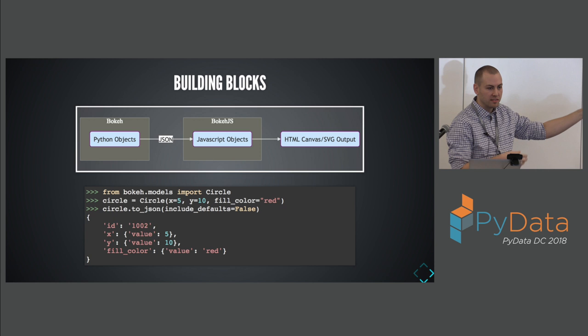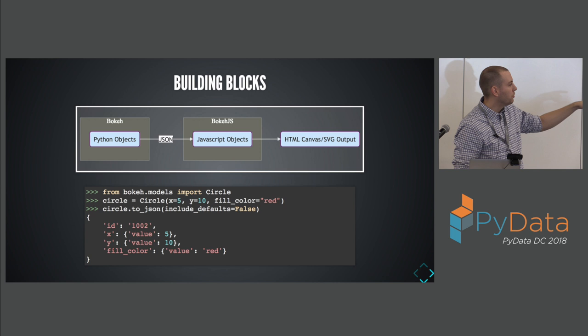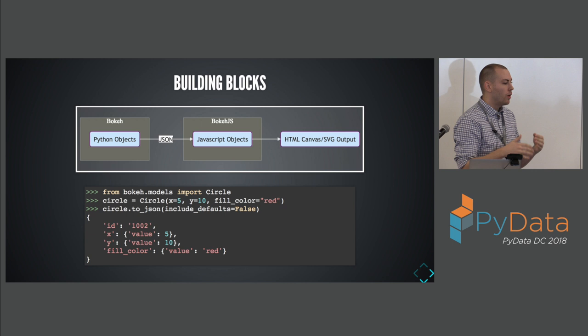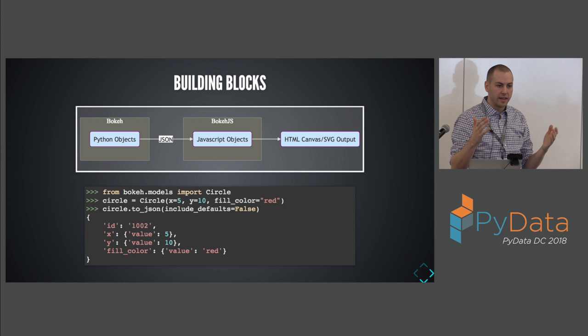This is a pretty common pattern for visualization libraries. Plotly does a very similar collection of Python objects that they serialize to JSON. Altair builds up objects that they serialize to a spec for a JavaScript library called Vega. This is a really good way to target friend libraries — when people want to create new language bindings, like our R Bokeh language binding, they really just have to build models that hit this JSON spec and they're able to take advantage of all the nice Bokeh stuff without having to do a ton of work.